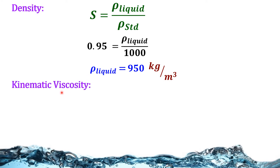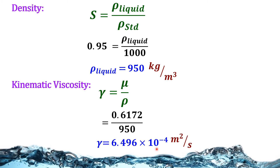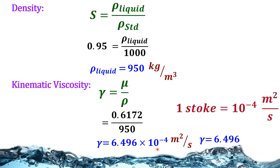Kinematic viscosity = dynamic viscosity / density. We must substitute dynamic viscosity in N·s/m². Therefore, kinematic viscosity = 0.6172 / 950 = 6.496 × 10⁻⁴ m²/s. To convert to stokes, we know 1 stoke = 10⁻⁴ m²/s. Therefore kinematic viscosity = 6.496 stokes.